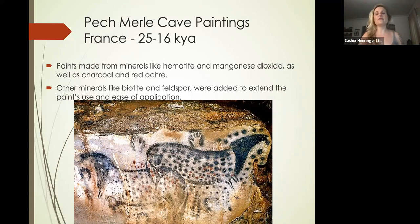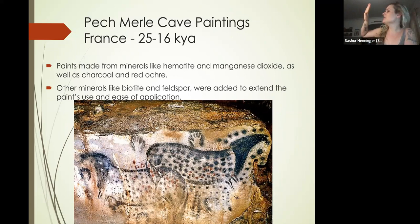If you were to just break up some hematite with water, it would drip. But by adding biotite, you make a nice thick paint that's going to stay. The way they're mixing these is in their mouth—chewing all of this material together and then spitting it out a little bit at a time.